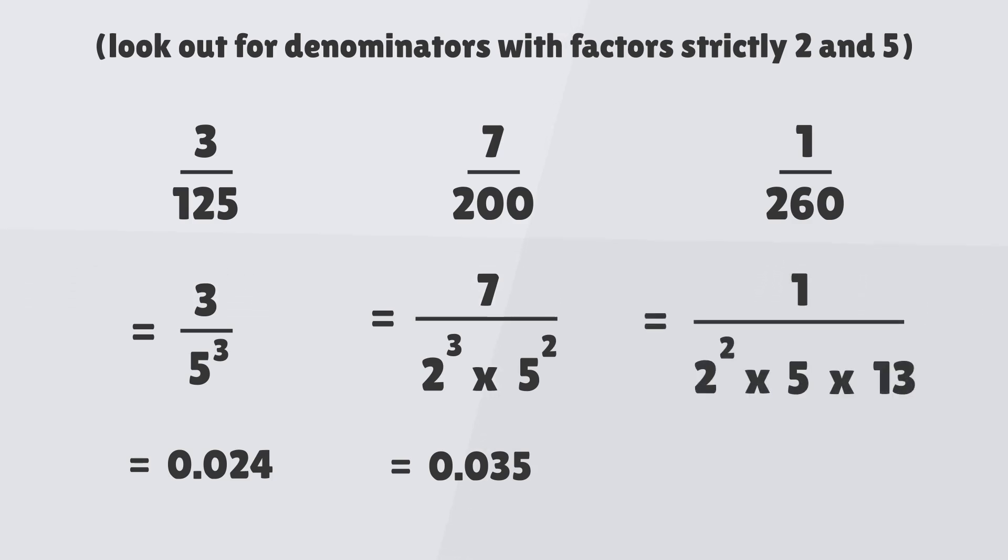The prime factor decomposition of the final denominator contains a value which isn't 2 or 5. Therefore, this one will have a recurring value. It equals 0.00384615 with the 384615 portion recurring over and over.